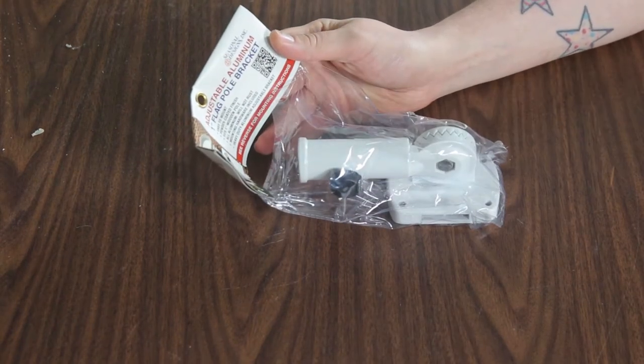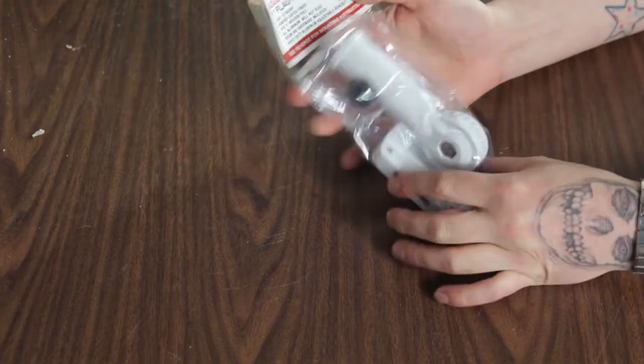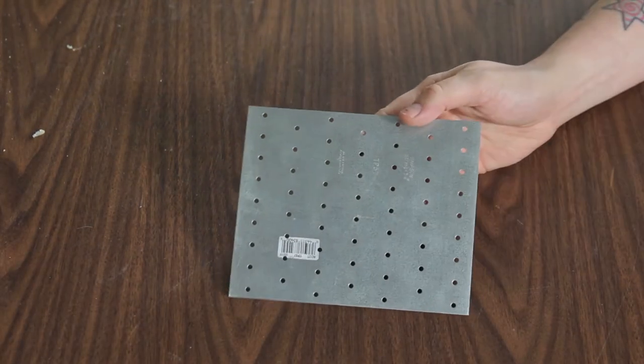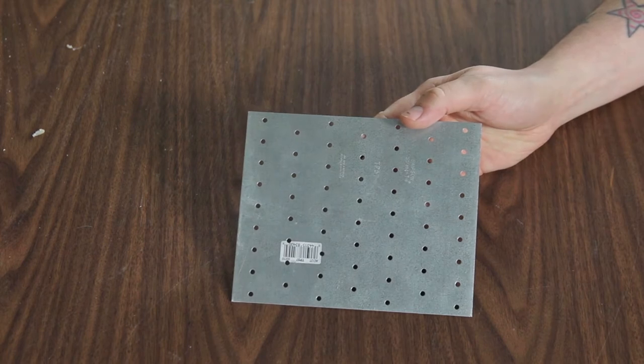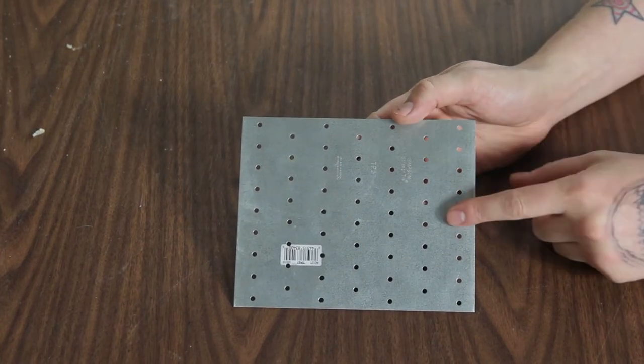You're going to need a flagpole holder. I got this from Home Depot. This was $6.97. This is metal, not plastic like I've seen some people use. This is one of the upgrades. This is a metal tie plate. I got this at Home Depot and it was $2.53.